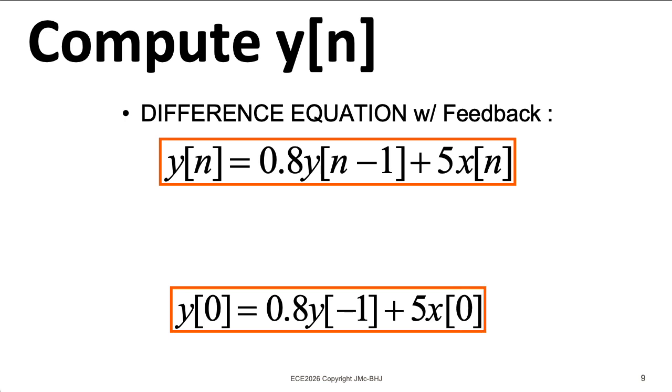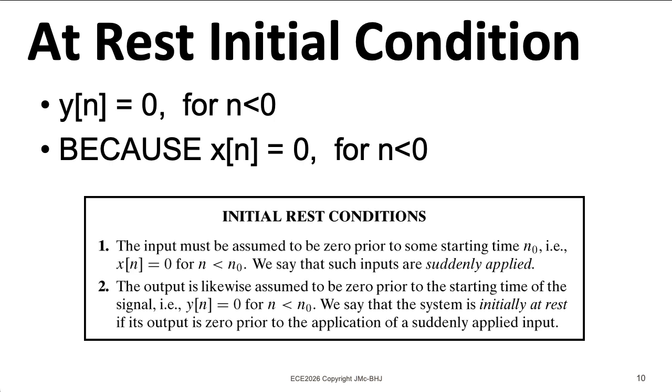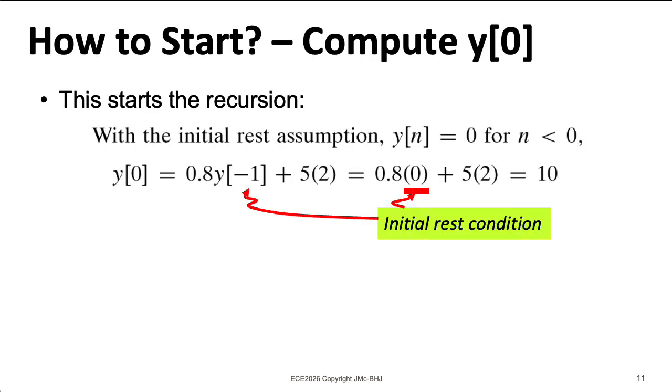At first glance, it looks like we have a chicken and egg problem. To figure out what y[0] is, we will need to know what y[-1] is. And to figure that out, we will need to know y[-2]. So we need to make some assumptions. We usually assume what's called the at rest initial conditions. So we're going to assume that there's no input before n equals 0. So we can assume that there's no output for n less than 0. So that y[n-1] equals 0.